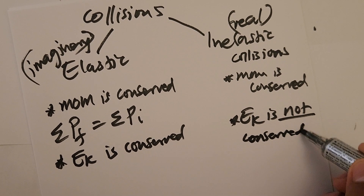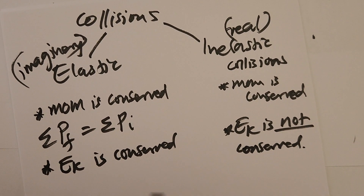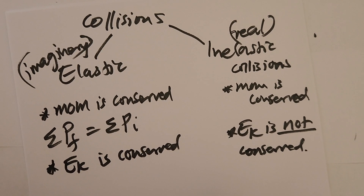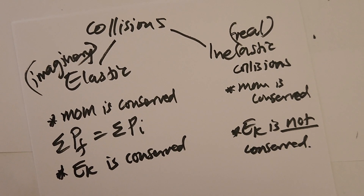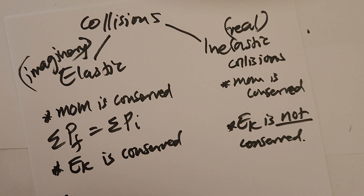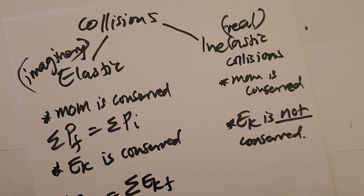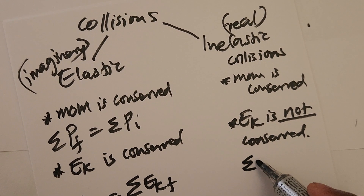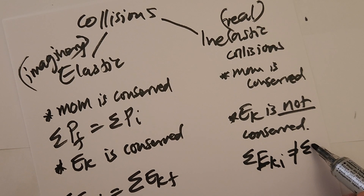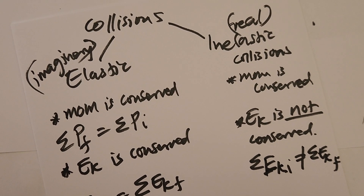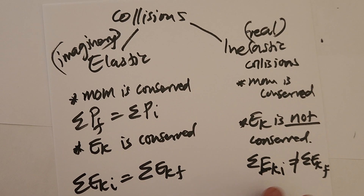If you were to differentiate between elastic and inelastic collisions, we do not compare momentum — both conserve momentum. We compare energy conservation. If kinetic energy is conserved, the collision was elastic. If kinetic energy is not conserved, the collision is inelastic. The total kinetic energy before equals the total kinetic energy after only in an elastic collision.